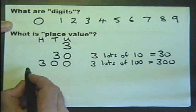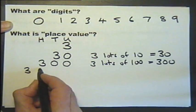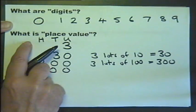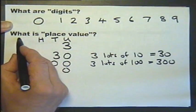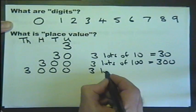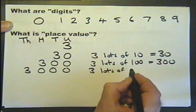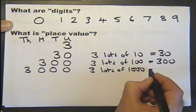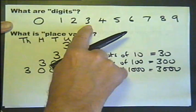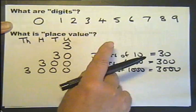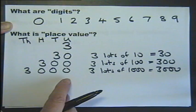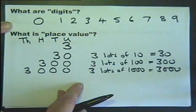We can go on one more column, for now anyway. Look at the 3 in the next column. And the next column is the thousands column. So we've got 3 lots of 1000, which is 3000. So the digit 3 can have different values depending on which column it's been placed under. So that gives us place value.